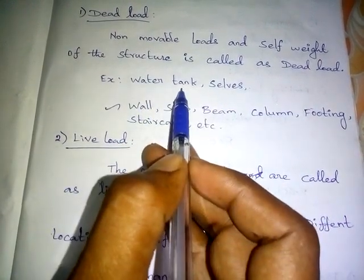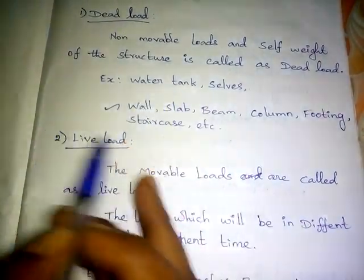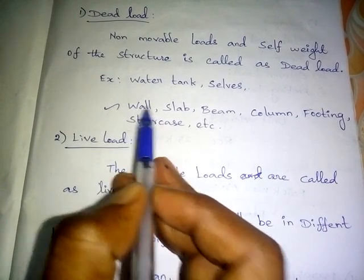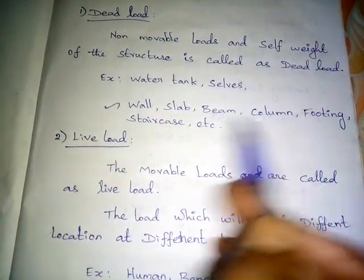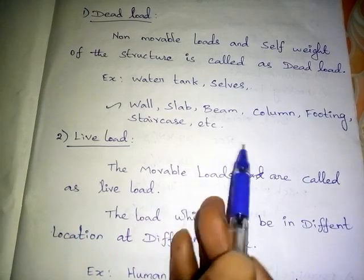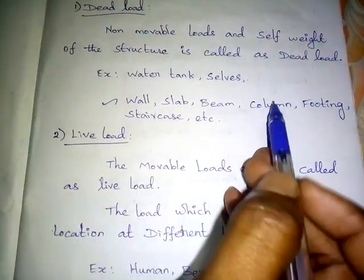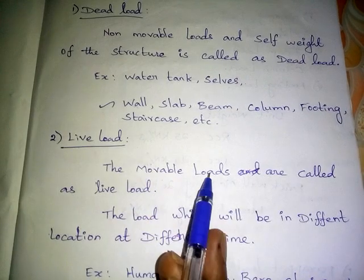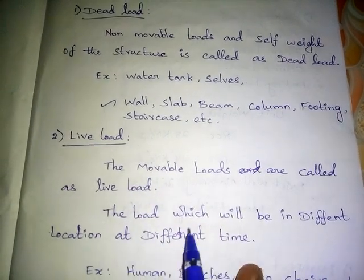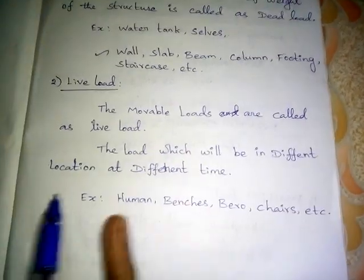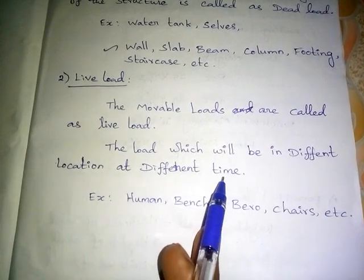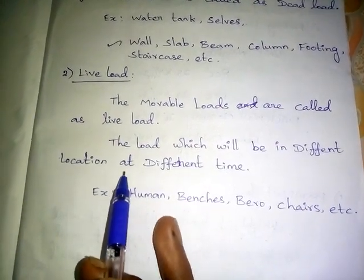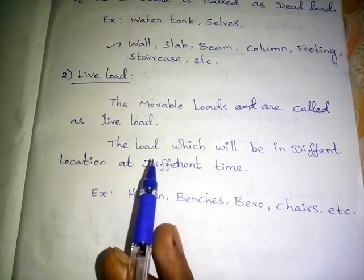The dead load includes the wall, slab, beam, column, footing, staircase, etc. — it is a part of the structure. The moveable load is called live load. The load will be in different locations at different times — that is, it moves from one area to another area.